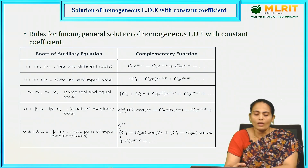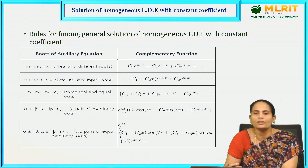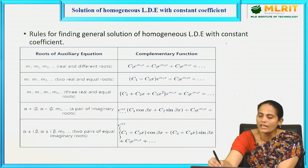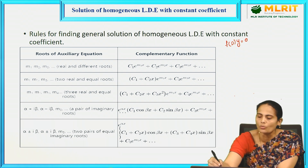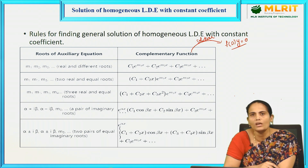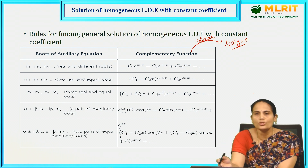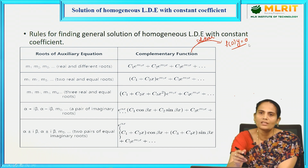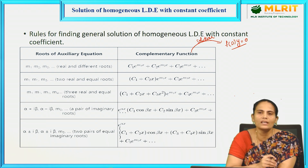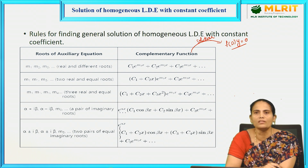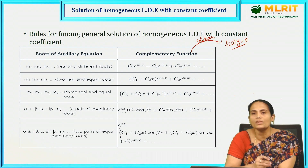The complementary function (CF) is the general solution of f(D)·y = 0 — that is, the solution of the homogeneous linear differential equation. To find the complementary function, first write the auxiliary equation, obtain the roots, and then write the CF based on the nature of those roots.